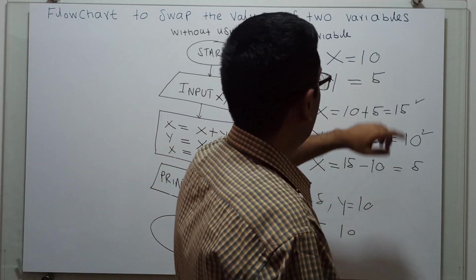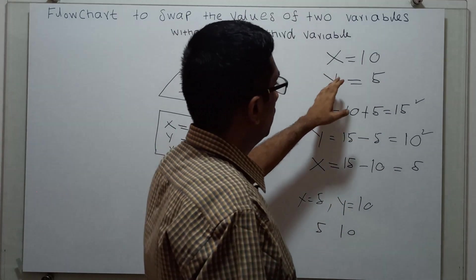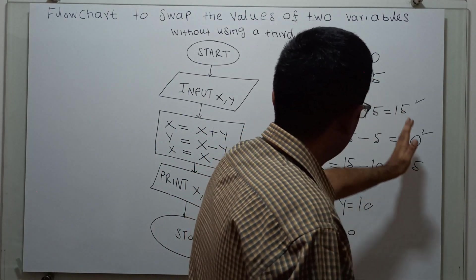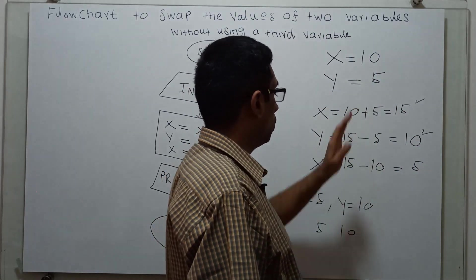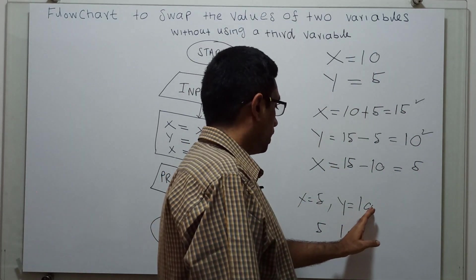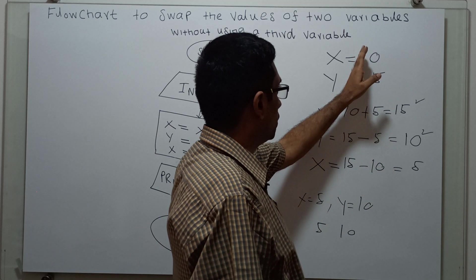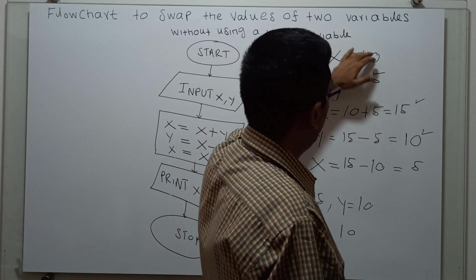What is my input? 10 comma 5. I am giving 10 to x and 5 to y. So after this logic, the x value becomes 5, which is y's old value. y value is 10, which is x's old value. That means these two values get swapped.